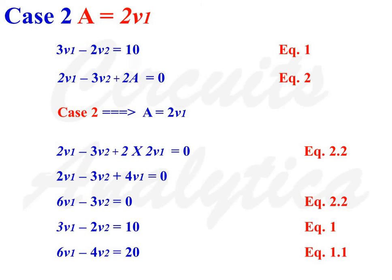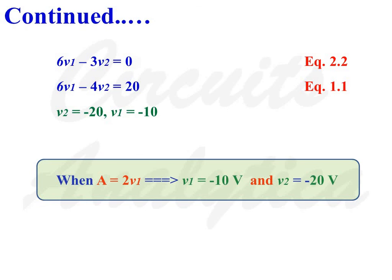From Equation 1: 3V1 minus 2V2 equals 10, scaling to 6V1 minus 4V2 equals 20 as Equation 1.1. Equation 2.2 is 6V1 minus 3V2 equals 0. Subtracting Equation 1.1 from Equation 2.2, we get V2 equals minus 20 and V1 equals minus 10. Therefore, when A equals 2V1: V1 equals minus 10V and V2 equals minus 20V, where A is the current sourced by the dependent current source.